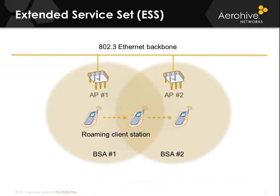An extended service set is one or more access points connected to the same distribution system, normally done to extend coverage area or provide an opportunity for roaming. Basic service set area 1 and BSA2 have APs connected to the same Ethernet backbone, so a client connected to AP1 can roam to AP2 as the user moves across that boundary while maintaining connectivity to the same Ethernet infrastructure. The APs don't strictly require the same SSID or security principles, but it is most commonly implemented that all APs in the same extended service set use the same SSID and security principles.